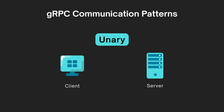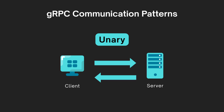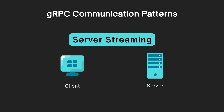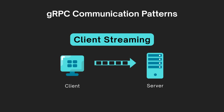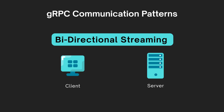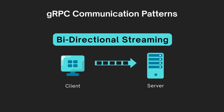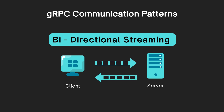Unary RPC works just like a regular function call — the client sends one request and gets one response. Server streaming RPC: the client sends one request and the server responds with a stream of messages. Client streaming RPC: the client sends a stream of requests and the server replies with a single response. Bi-directional streaming RPC: both the client and server can send and receive streams of messages simultaneously. This flexibility makes gRPC a great fit for everything from real-time chat apps to large-scale data pipelines.